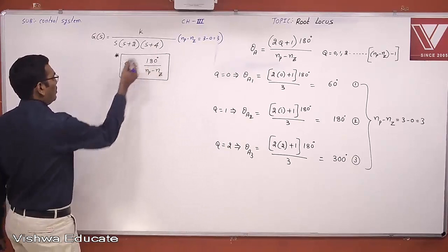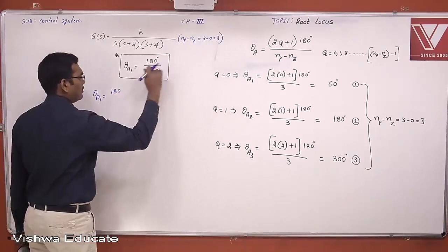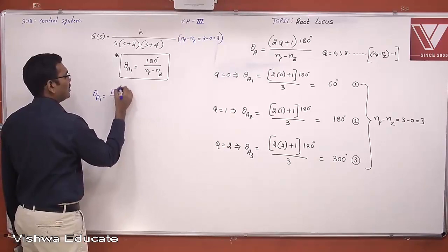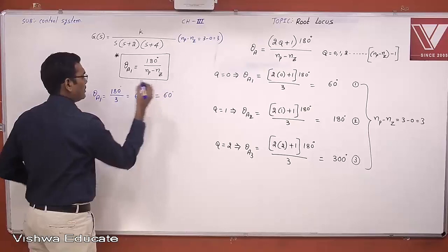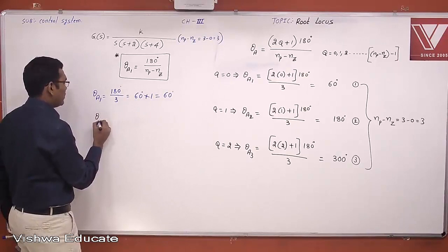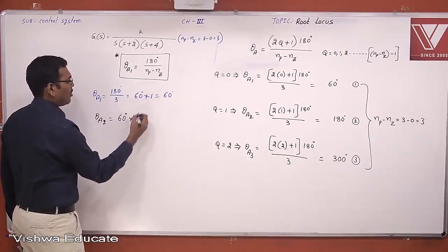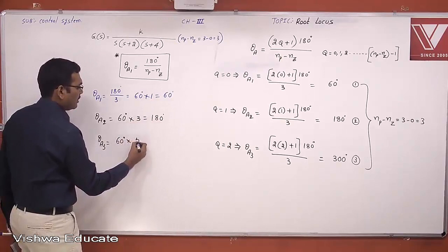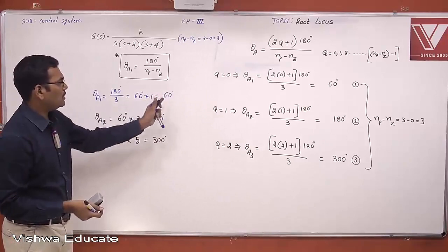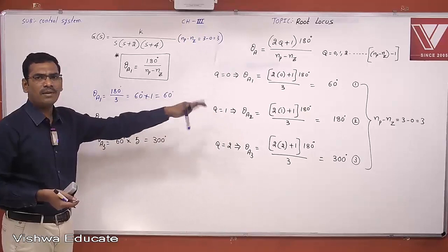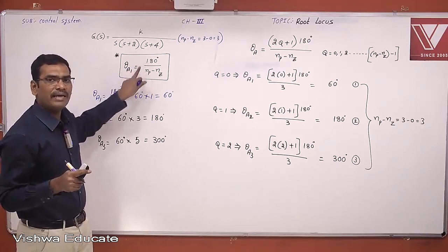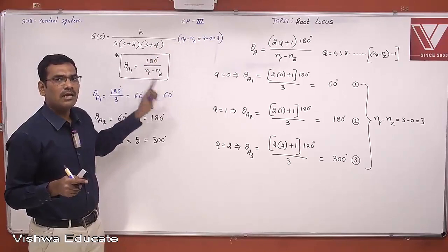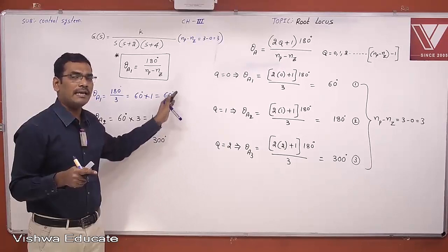Using the shortcut: 180° / (Np − Nz) = 180° / 3 = 60°. The second angle of asymptote is the first angle multiplied by the next odd number 3, giving 60° × 3 = 180°. The third angle is 60° × 5 = 300°. The results match — 60°, 180°, 300°. This shortcut avoids using the full formula every time.